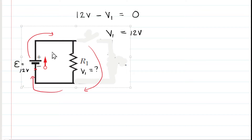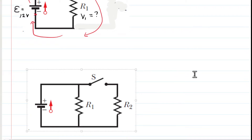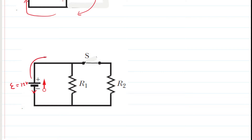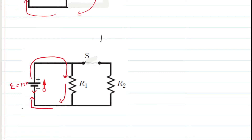Now let's close the switch and see what happens. Closing the switch introduces the right section of the circuit, but we can still apply the loop rule. The battery still supplies 12 volts. If we start at the negative terminal and go through the left loop, the calculation is exactly the same: 12 volt increase across the battery terminals, then a potential drop across resistor 1. Solving that, V sub 1 is still equal to 12 volts.